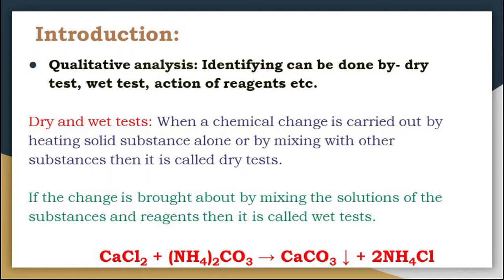When a chemical change is carried out by heating a solid substance alone or by mixing with other substances, then it is called a dry test. And if a chemical change is brought about by mixing the solutions of the substances and reagents, then it is called a wet test. The solution of the substance under identification, when subjected to the action of known substances, is changed into a new compound with distinct known properties. From the resulting new compound, the substance can be identified.